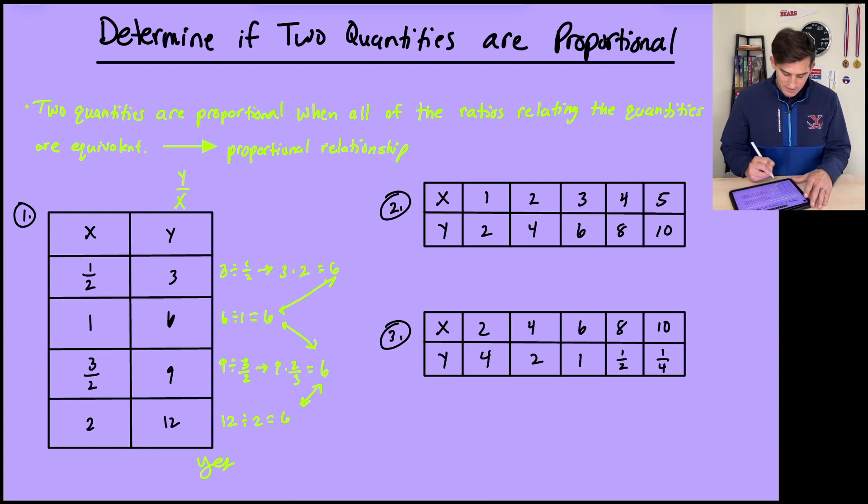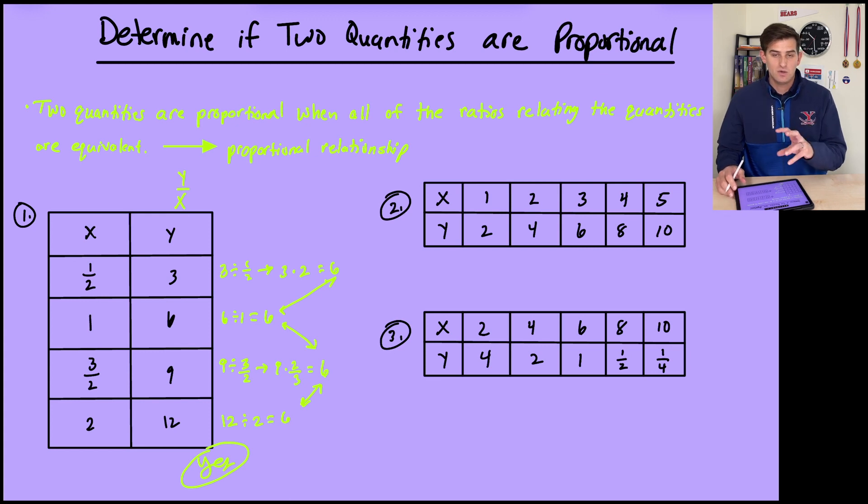So notice how we got a result of 6 each time we divided y by x. So for this one, we would say yes, these quantities here, x and y, are proportional to one another.